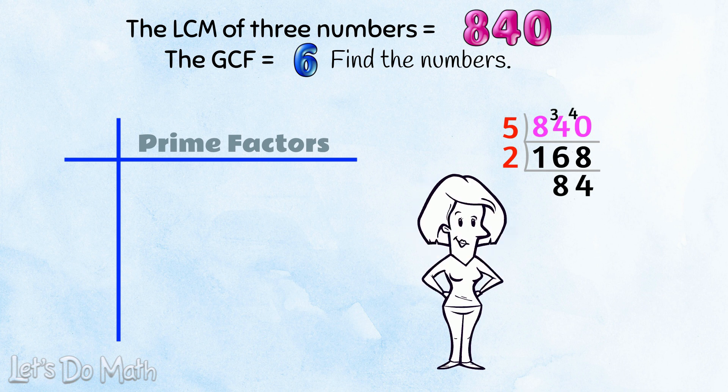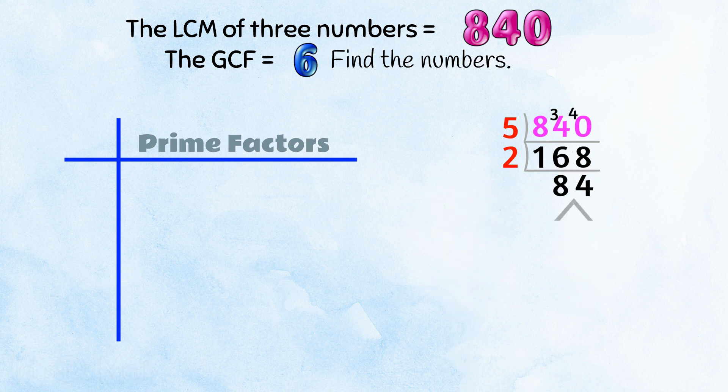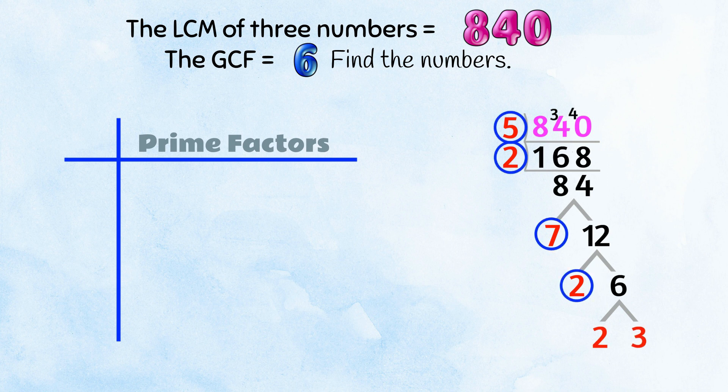Great! We know that 7 times 12 is 84. So we can jump into factor tree mode to finish this off quickly. 84 is from 7 times 12. 12 is from 2 times 6. And 6 is from 2 times 3. Circle all the primes so you don't miss any.